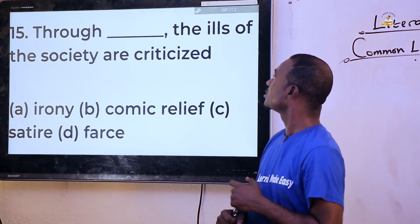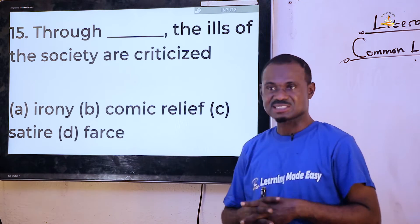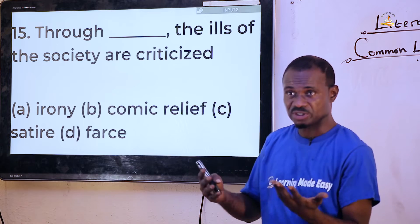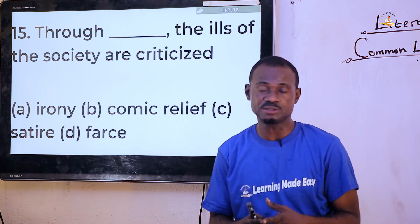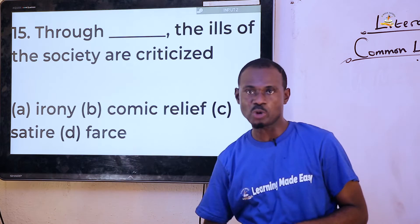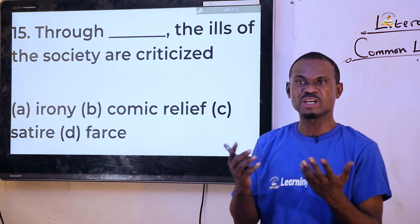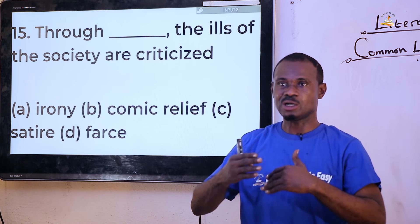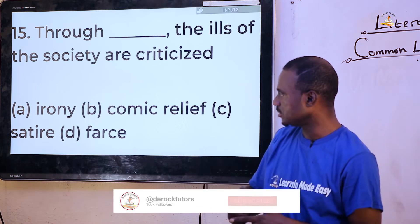Question fifteen: 'Through dash the ills of the society are criticized.' Options are irony, comic relief, satire, and farce. Not irony — that says the opposite and means the opposite. Not comic relief — that is a short humorous scene added to a tragic play. Not farce — that is a form of comedy with incredible actions. The answer is satire, which is a work of art that indirectly criticizes a person or society.